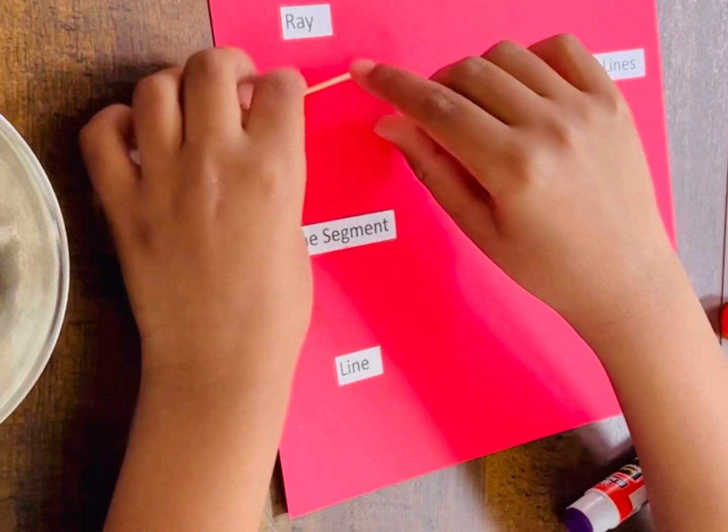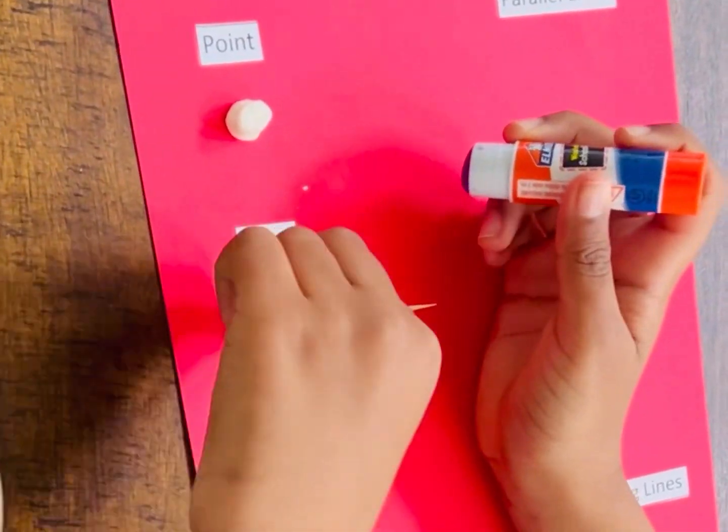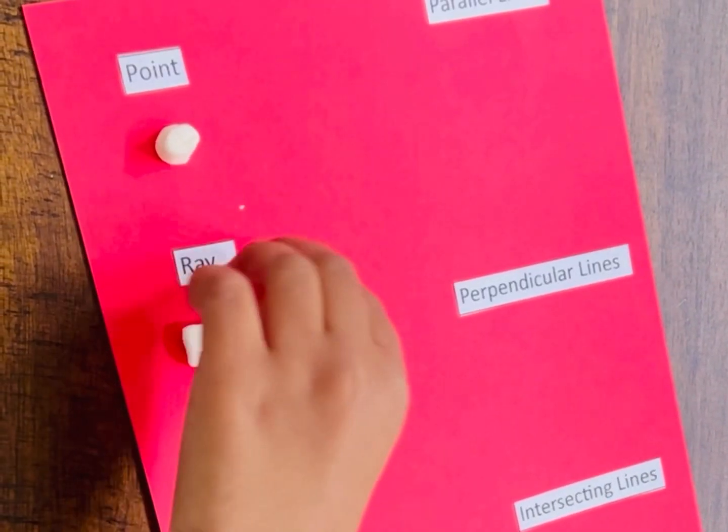So only if it's like this, only this part of the line will keep on going. So a ray has an end point. It stops here, but it keeps on going the other way.